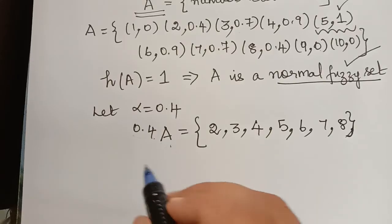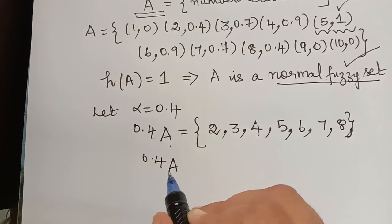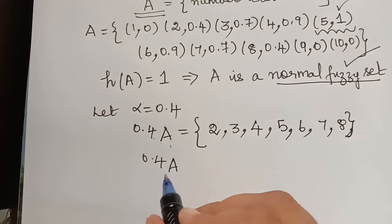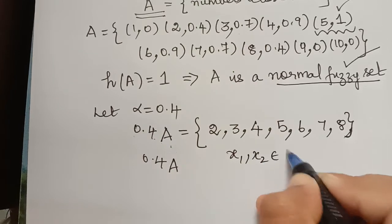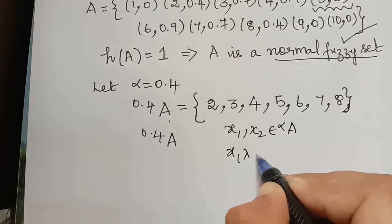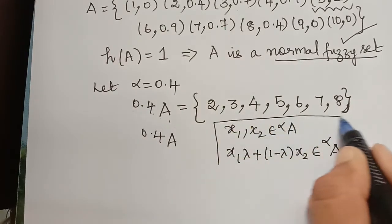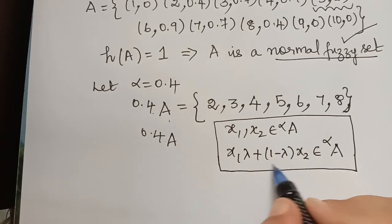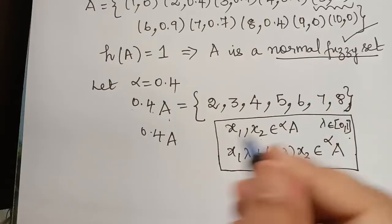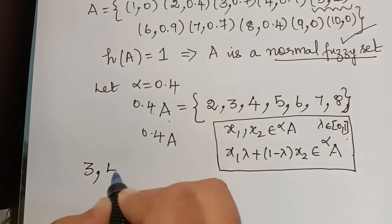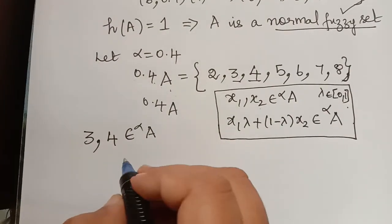We have to prove that the 0.4-cut of A is a closed interval by showing it is convex. For a set to be convex, we take two elements from that set and prove that x1·λ + (1−λ)·x2 is also an element of that alpha cut set for every λ in [0, 1]. Let me take elements x1 = 3 and x2 = 4 from the alpha cut set, and take λ = 0.5.